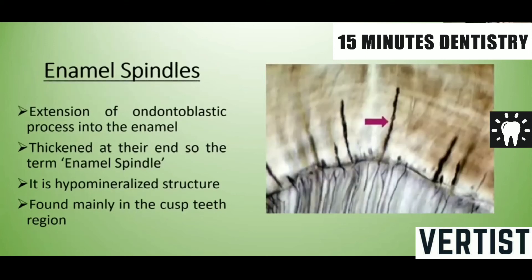Next is enamel spindles. Enamel spindles are extensions of the odontoblastic process into the enamel, and they are thickened at their ends. They are hypomineralized areas and are found mainly in the cusp region of teeth.